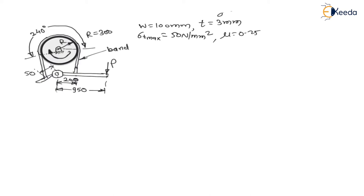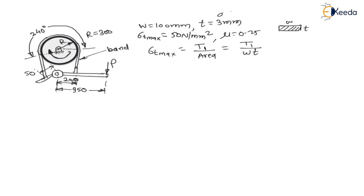Maximum tensile stress is 50 MPa. Maximum tensile stress equals maximum tension T1 divided by area. Area equals width W multiplied by thickness T. Therefore, tight side tension T1 = σ_T_max × W × T = 50 × 100 × 3.